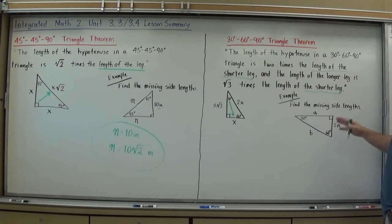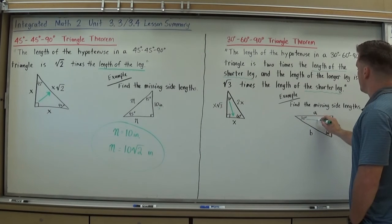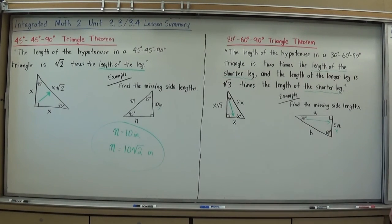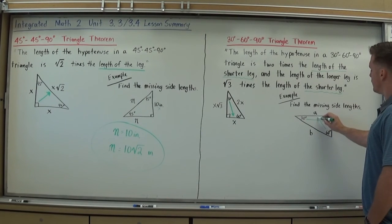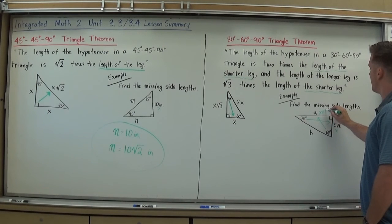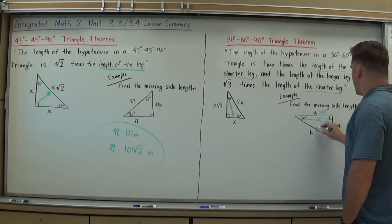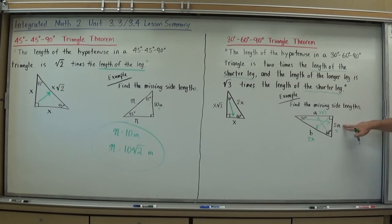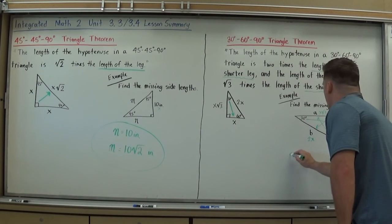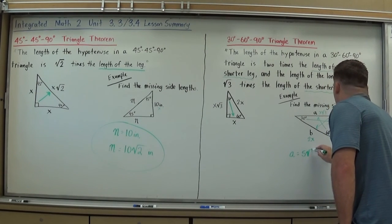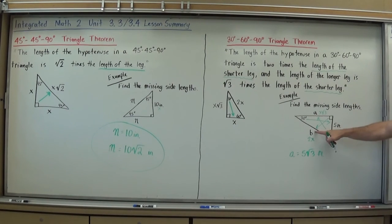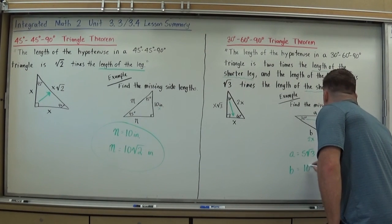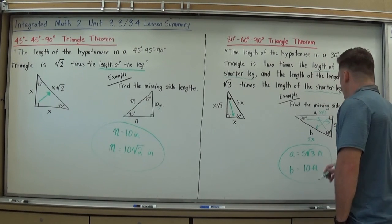I immediately recognize the triangle as a 30-60-90 and remember my ratio: x, x√3, 2x. Starting at the 30° angle, the side opposite it must be x — and since that side is 5 feet, x equals 5. Opposite the 60° is A, which equals x√3, making A equal to 5√3 feet. Opposite the 90° is B, which equals 2x; since x is 5, B equals 10 feet. And just like that, I have my side lengths.